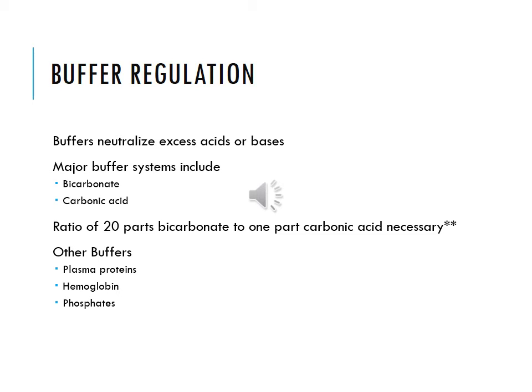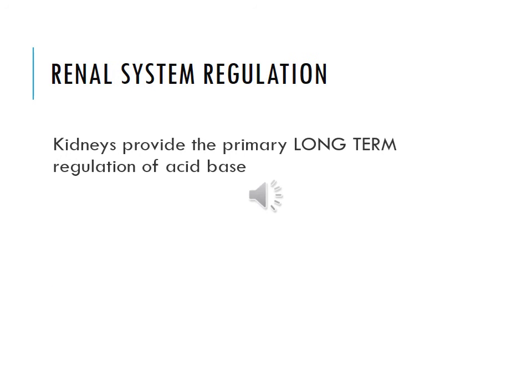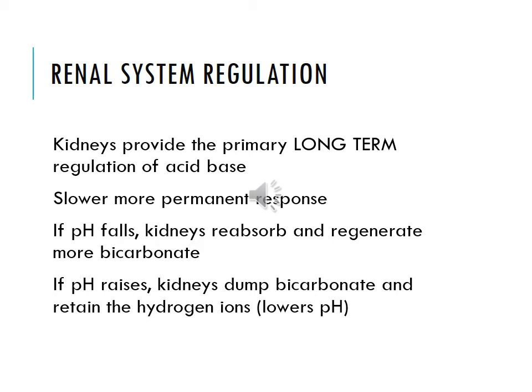Buffers neutralize excess acids or bases. The major buffers are bicarbonate and carbonic acid; you must have a ratio of 20 parts bicarbonate to one part carbonic acid. Other buffers include plasma hemoglobin and phosphates. The kidneys provide the primary long-term regulation of acid-base balance. If pH falls, the kidneys will reabsorb and regenerate more bicarbonate; if it rises, the kidneys will dump bicarbonate and retain hydrogen ions, which lowers the pH.